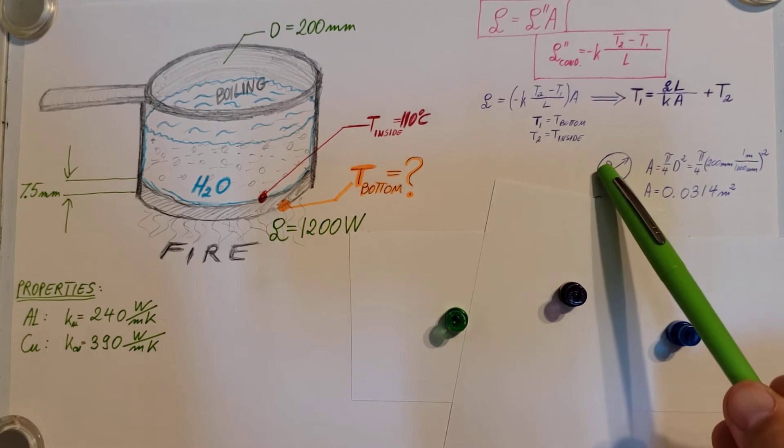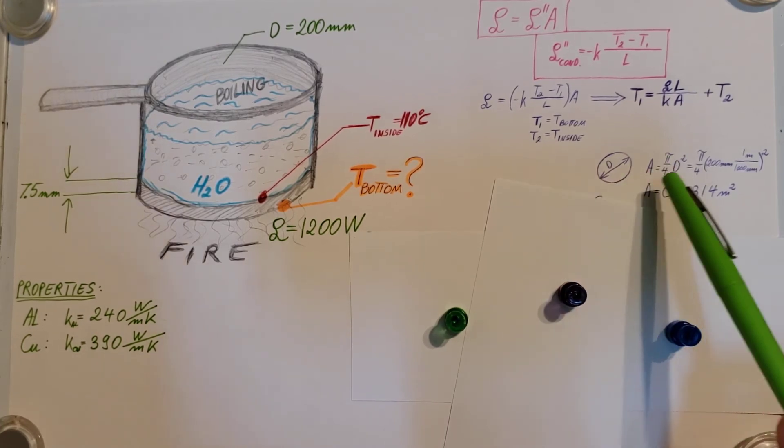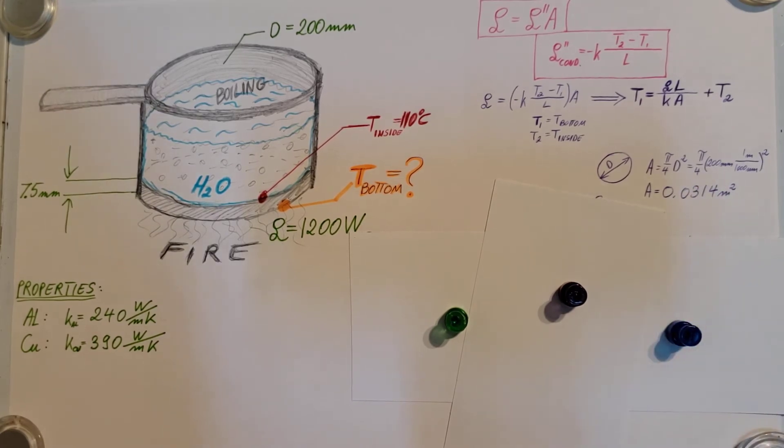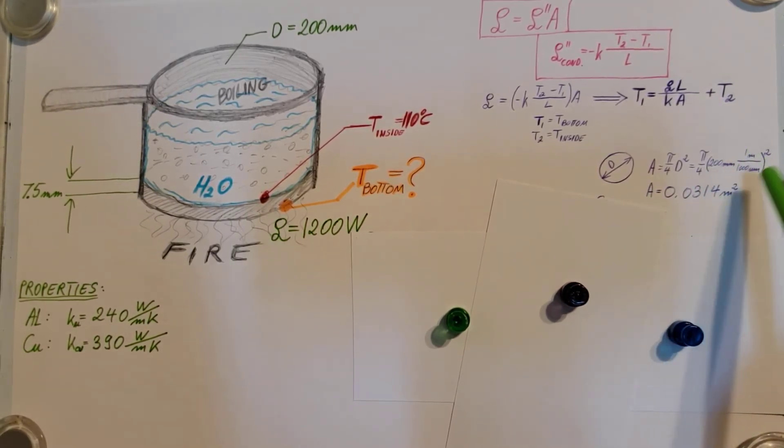The area of the bottom of the pan: pi over 4 times D squared. Plug everything in, and there it is: 0.0314 meters squared.